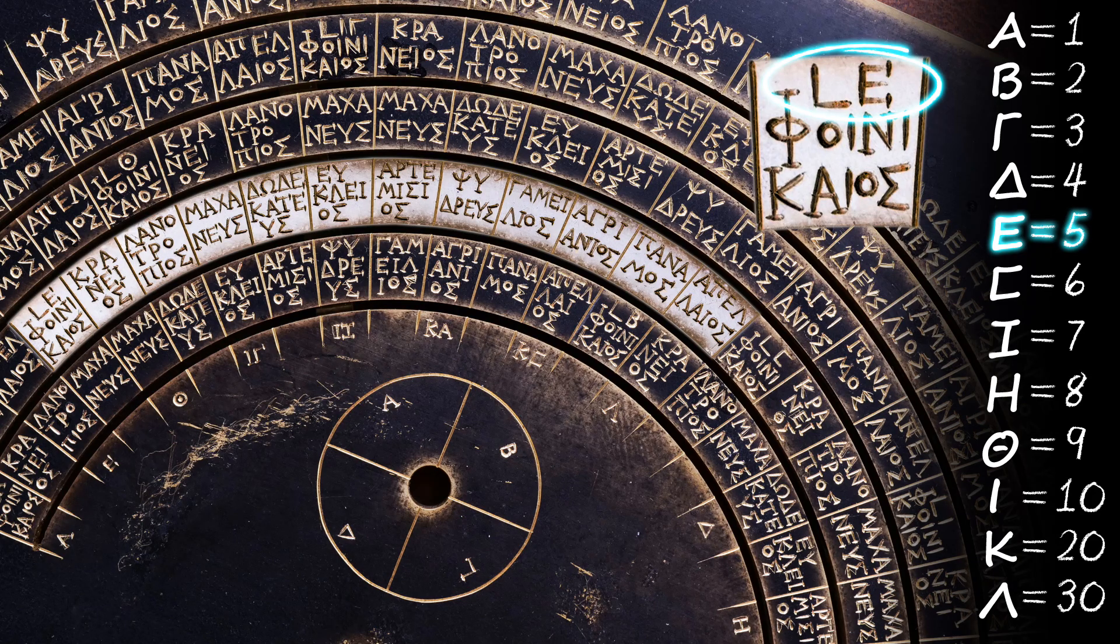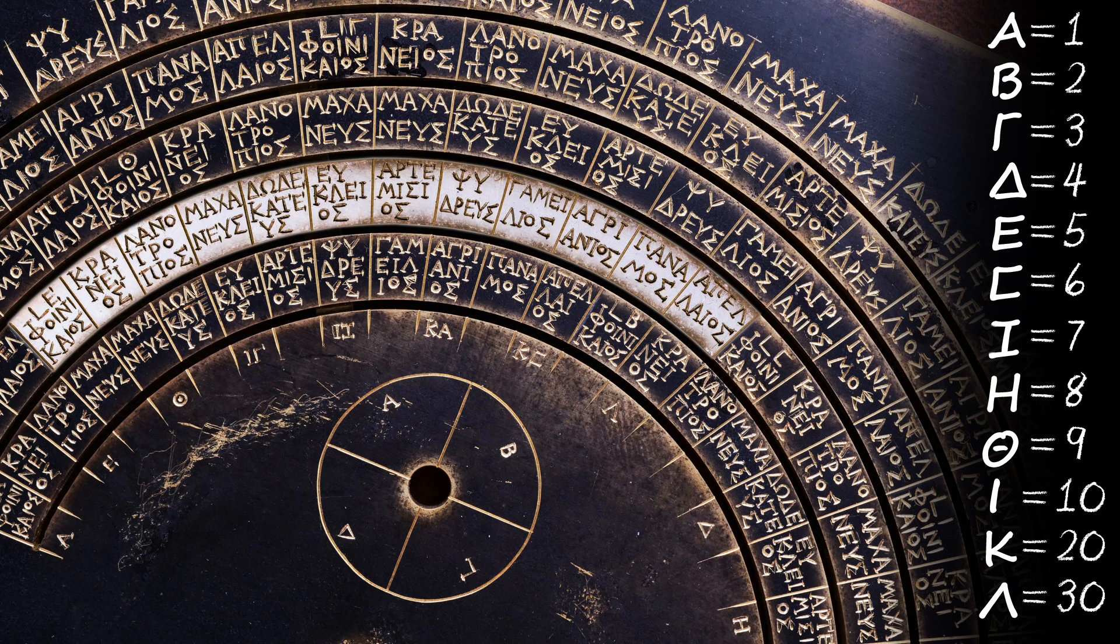As an example, the 7th month of this year, Artemisios, has no characters inscribed on the inside of its radius segment. So we know that in this year, Artemisios is a full month with 30 days.